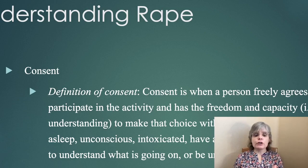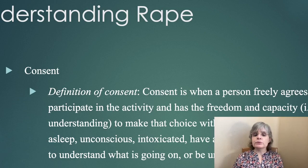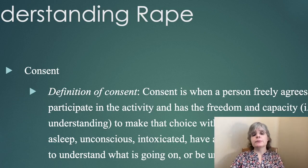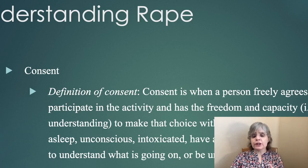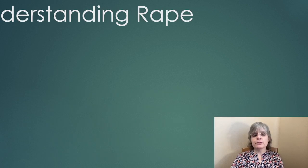For consent to be valid, a person cannot be asleep, unconscious, intoxicated, have a mental restriction, be too young to understand what's going on, or be undergoing a medical procedure — they have to be able to agree to what's going on. Examples of ignoring consent would be coercion, intimidation, use of physical force or violence, deceiving or threatening, or abuse of authority.